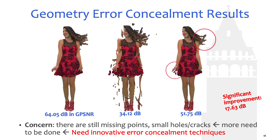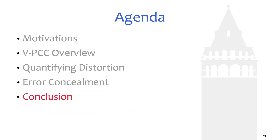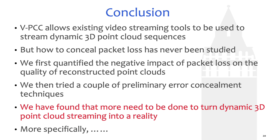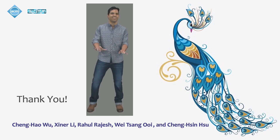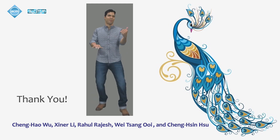In this work, we quantify the negative impact of packet loss on dynamic 3D point cloud streaming and propose a couple of preliminary error concealment techniques. Of course, there is more to be done. Several future directions are possible — for example, integrating error concealment techniques in G-PCC, V-PCC, and rendering engines. How to achieve all these in real time is an exciting challenge. Thank you for listening, and we are ready to take questions.